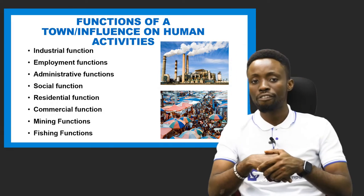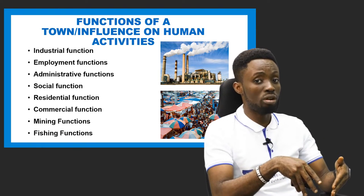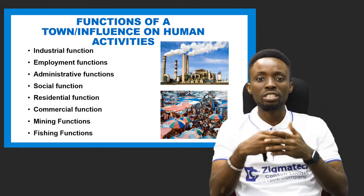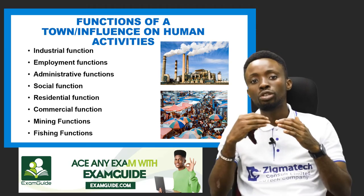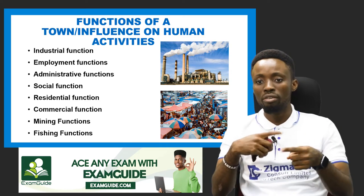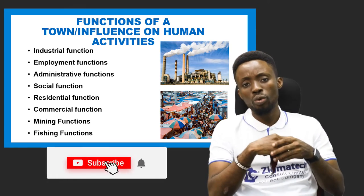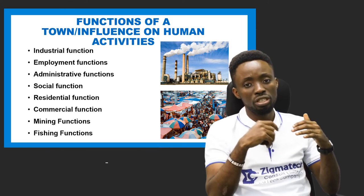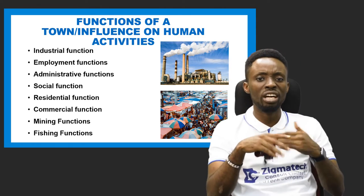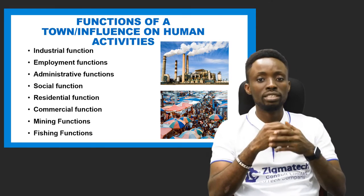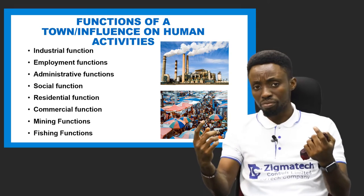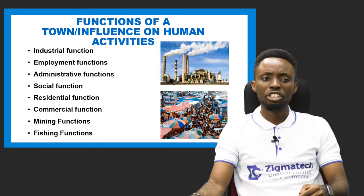Towns also have a mining function — there are mining towns rich in natural resources like crude oil, coal, tin, and copper. Additionally, in towns where we have rivers, fishing activities are carried out. For example, in Lokoja town or in Ibeno or Eket in Akwa Ibom State, you can see fishing activities going on. So a town can perform fishing functions as well.